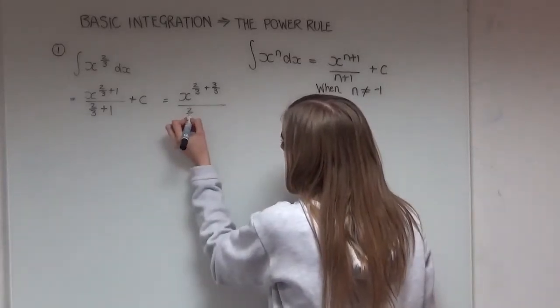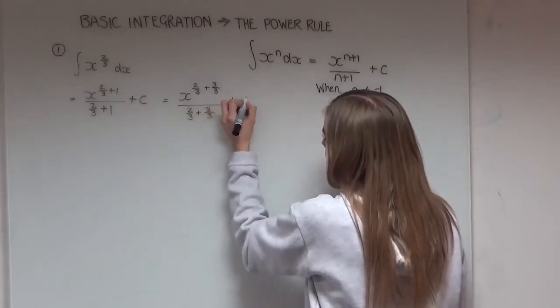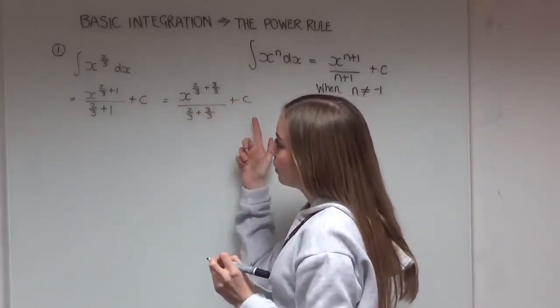And then the same here, so we have 2 over 3 and I'm going to add 3 thirds to it. And then our constant of integration stays the same there as well.